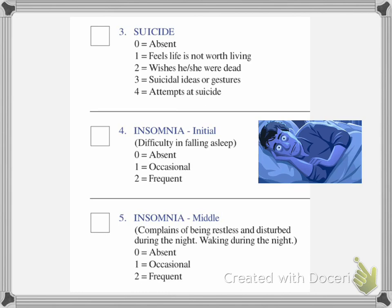If they're having hallucinations of guilt — actually hearing voices or seeing things telling them they're guilty — that's a four. Question three is suicide. If they have attempts at suicide, mark it a four; nothing is a zero. If they have ideas but won't act on them, that's a one. If they wish they were dead but wouldn't do it, that's a two. Suicide ideas with a plan is a three.